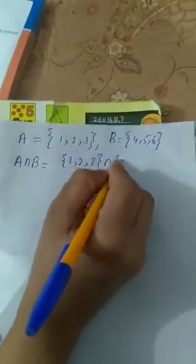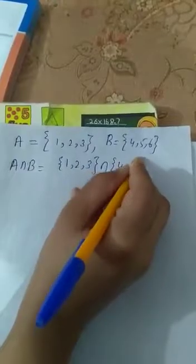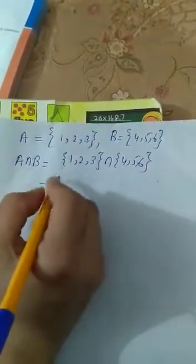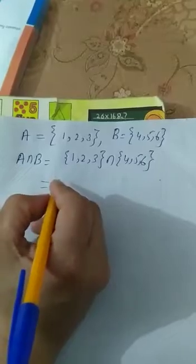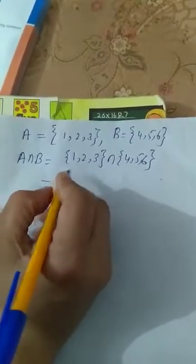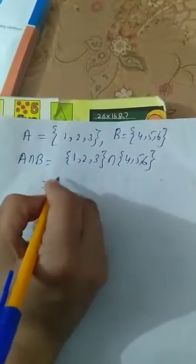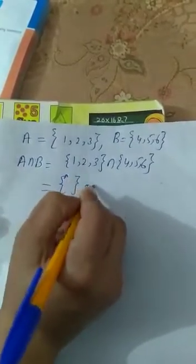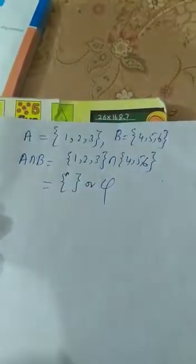Then 1, 2, 3 intersection 4, 5, 6. Let's see. You have learned in the previous topic the intersection of two sets. In intersection of two sets, we take common elements. There is no common element. That's why it will be equal to empty or phi.